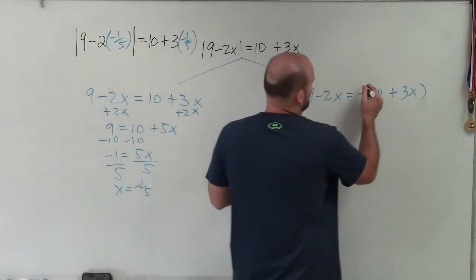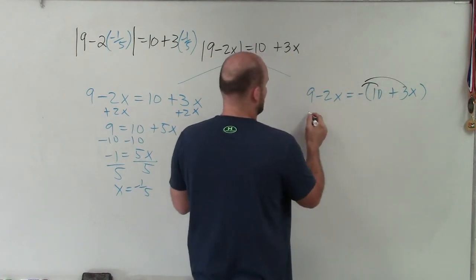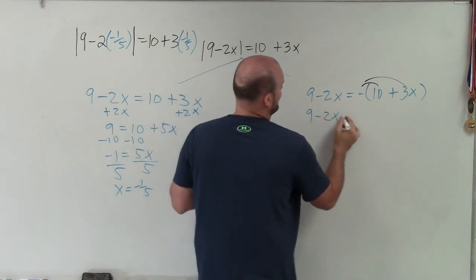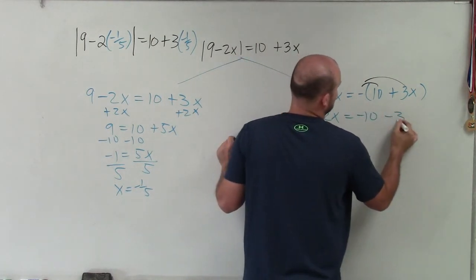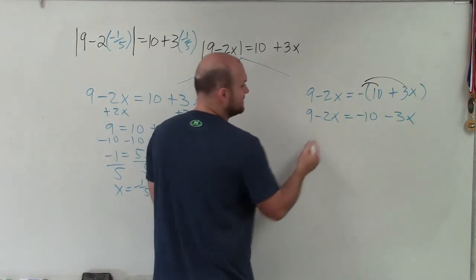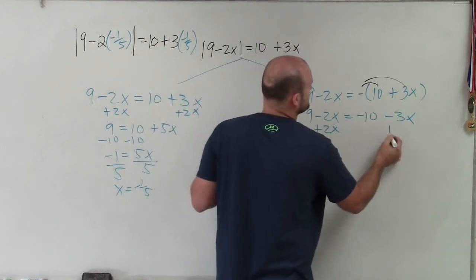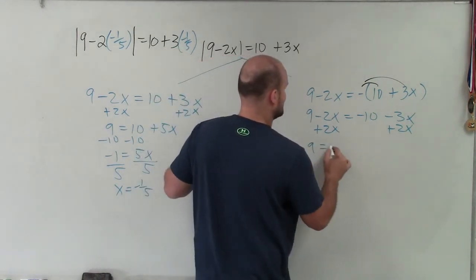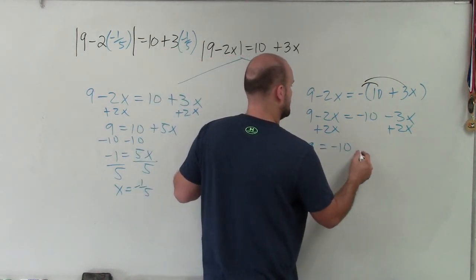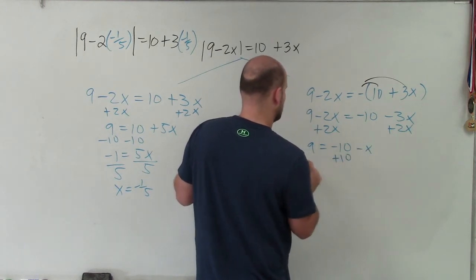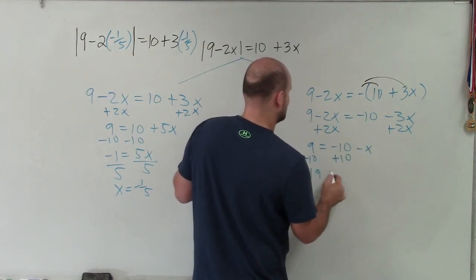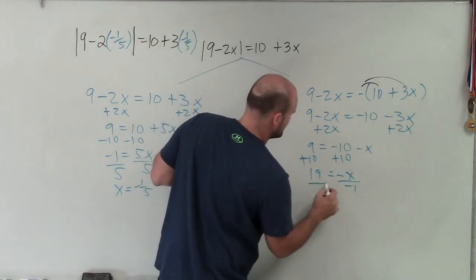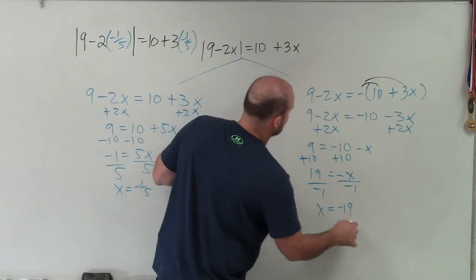Next thing is I need to distribute the negative. When doing that, I now obtain 9 minus 2x equals negative 10 minus 3x. Then go and isolate the variable x by itself. So I add 2x, add 2x. And I have 9 is equal to a negative 10 minus x. Add 10, add 10, 19 equals a negative x. And divide by negative 1, divide by negative 1, and I get x equals a negative 19.